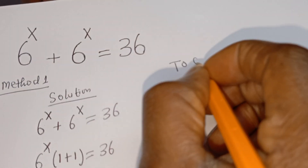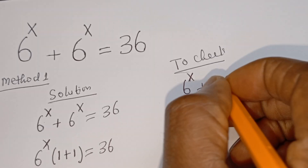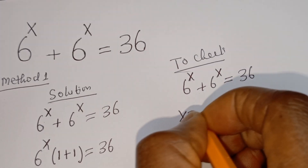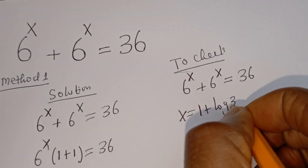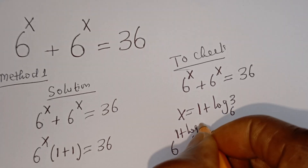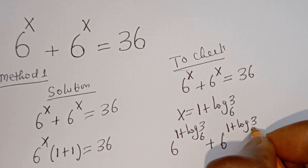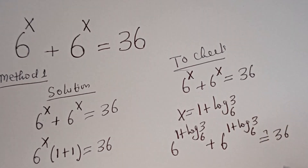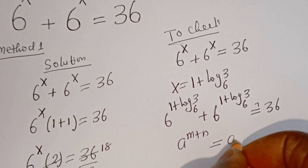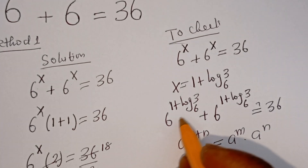To check, we have the given equation 6 to the power of x plus 6 to the power of x equals 36. When x equals 1 plus log 3 base 6, we have 6 to the power of (1 plus log 3 base 6) plus 6 to the power of (1 plus log 3 base 6) must equal 36. Using the exponent rule a^(m+n) = a^m × a^n, this can be rewritten.